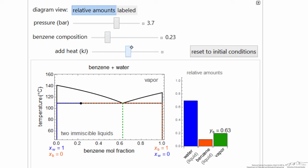So as I add heat, I have less benzene, I have less water. They both have to evaporate to give us this overall composition of 0.63 for the vapor phase.